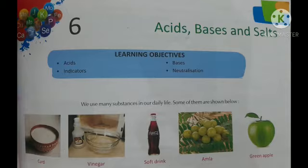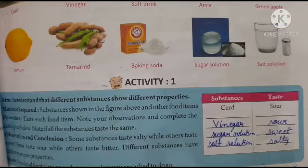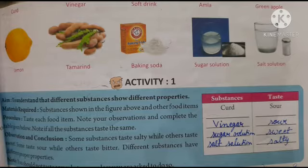Here some pictures are given: curd, vinegar, soft drink, amla, green apple, lemon, tamarind, baking soda, sugar solution and salt solution. We will taste all these substances and identify the taste. This is the activity — we fill in the first column with the substance and in the second column the taste.